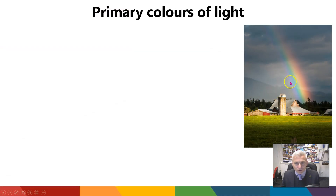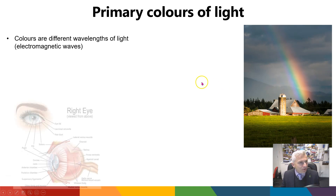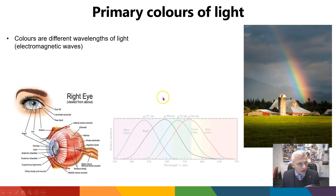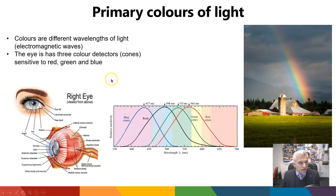Different colours of light are actually different wavelengths of light, and a rainbow is when white light is split up into its constituent wavelengths by water. Your eye has three different cones which are sensitive to different wavelengths of light. They are sensitive to a range of wavelengths, but they peak at about these wavelengths. Those three colour sensors can detect the whole spectrum of colours depending on how much each of those three cones are firing.